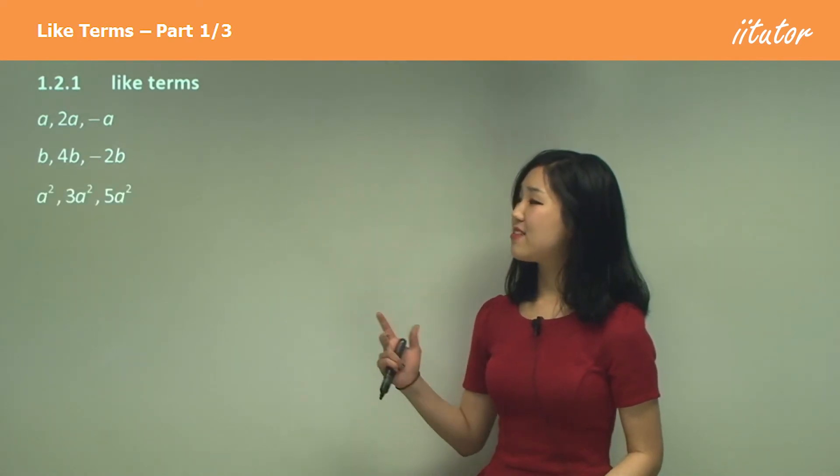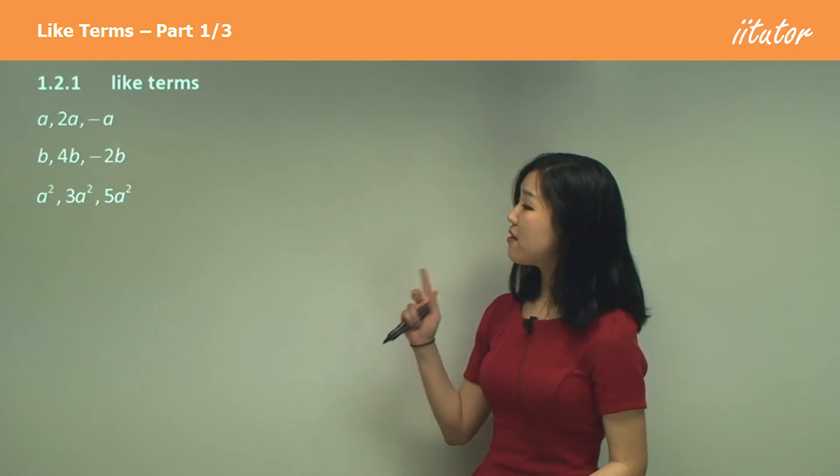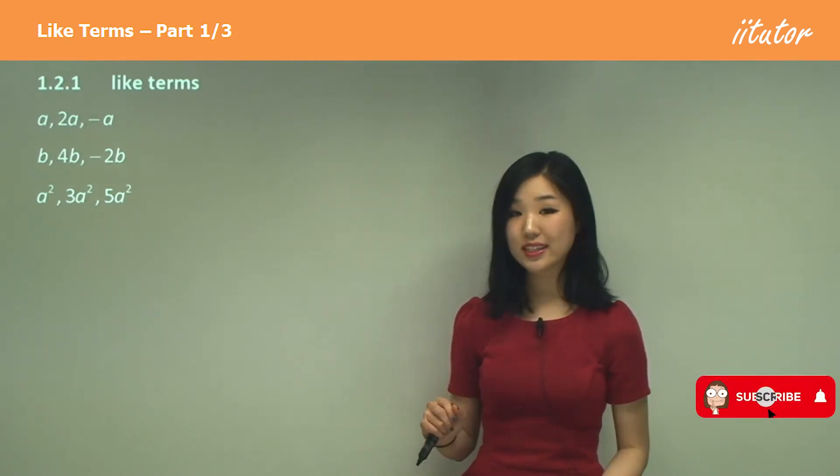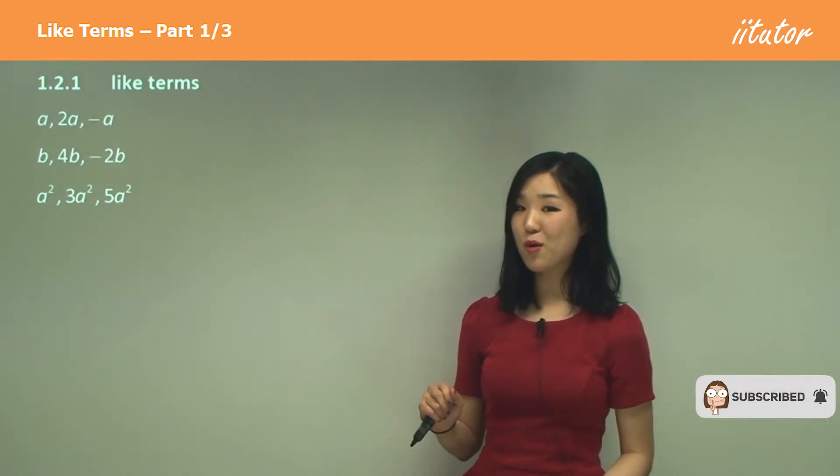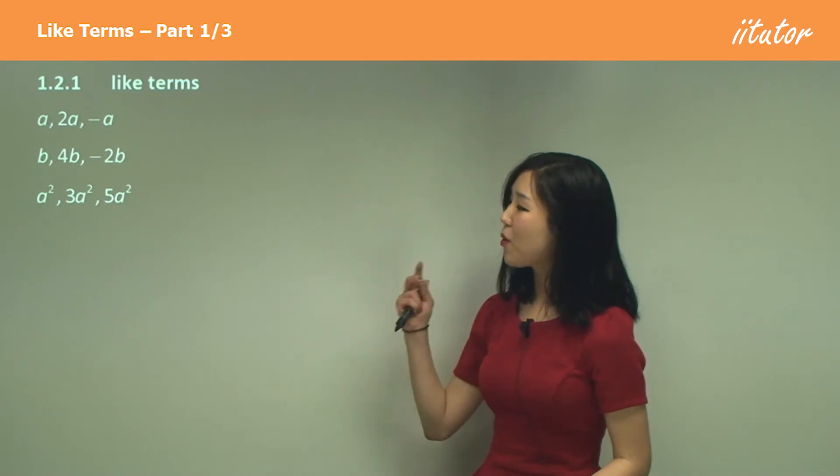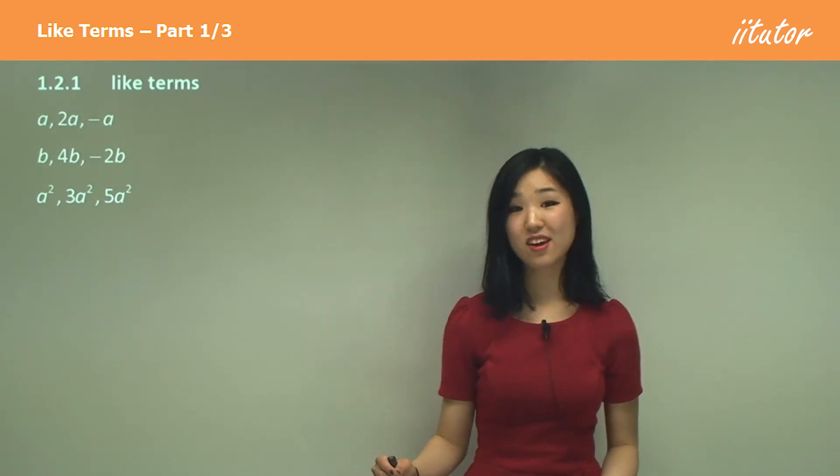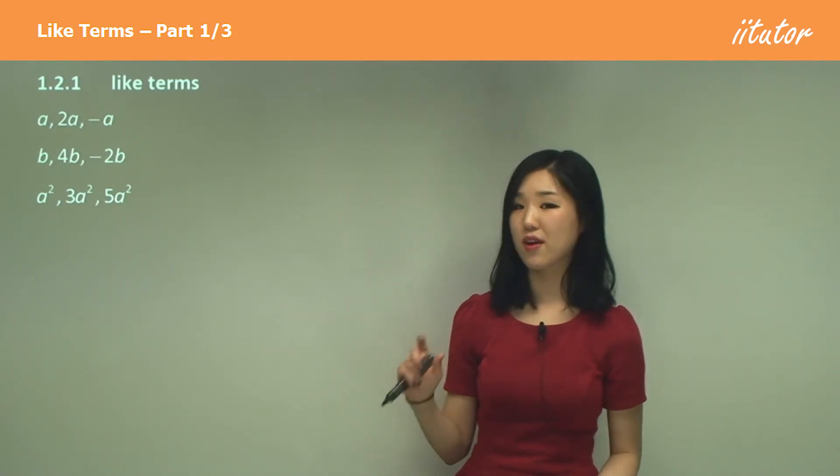Now these ones, a squared, 3a squared, 5a squared, these are also like terms. Hopefully you all know why, because we all have a squared at the end. So a squared is common, that's why they're called like terms.